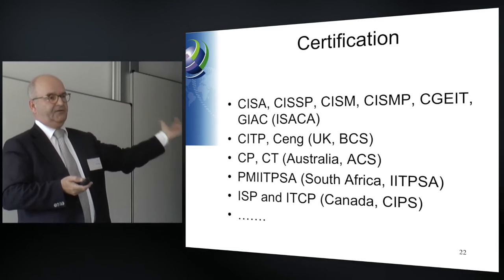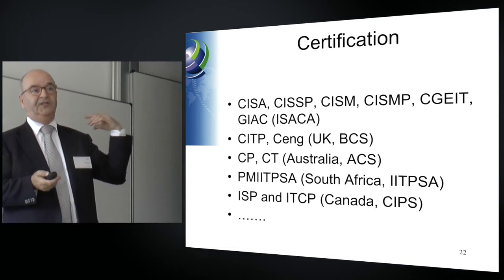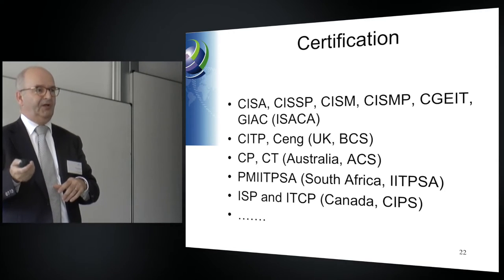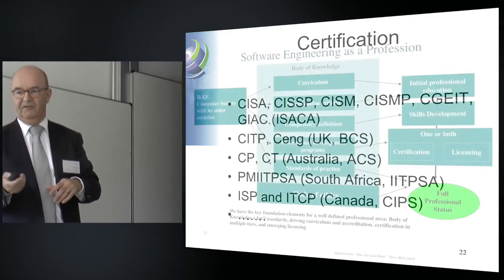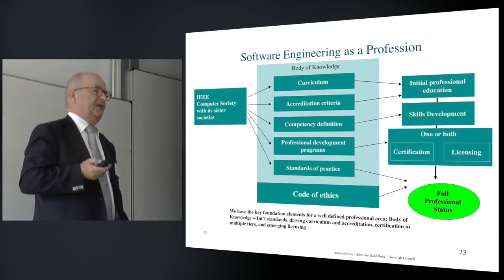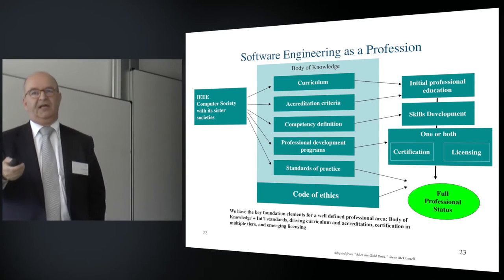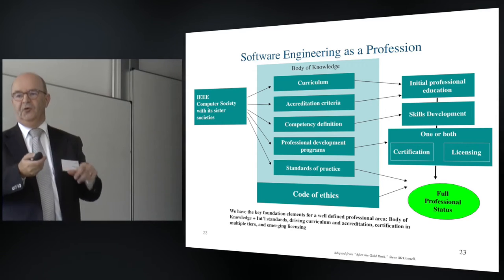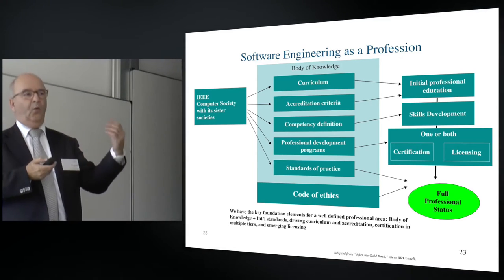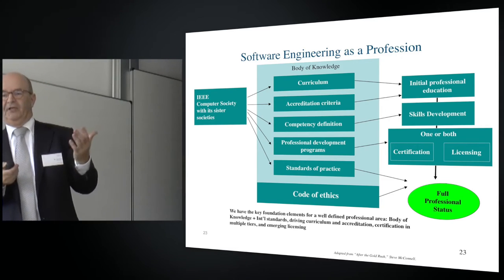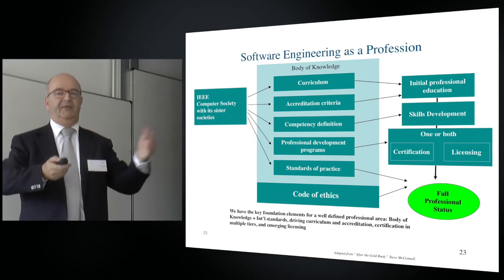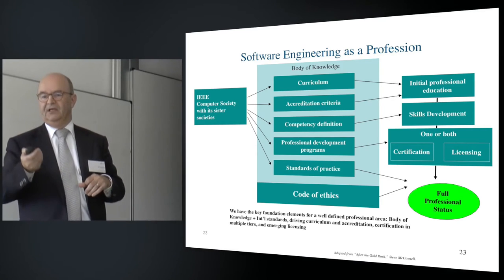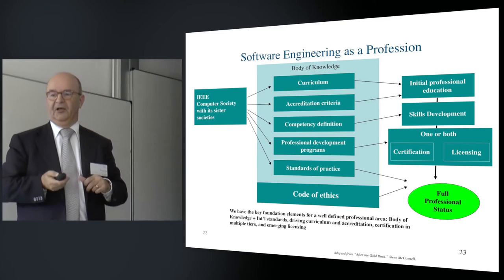Personally, if I were in an HR department I'd get desperate looking at all the things people provide. It's not easy to see which of the seven post-nominals on business cards are really valid. I've taken the example of the IEEE Computer Society — software engineering as a profession is well-established, and the IEEE CS is well-acknowledged for having a solid, good structure and program. Elements include curriculum, accreditation criteria, competencies, professional development programs, standards of practice, and codes of ethics.